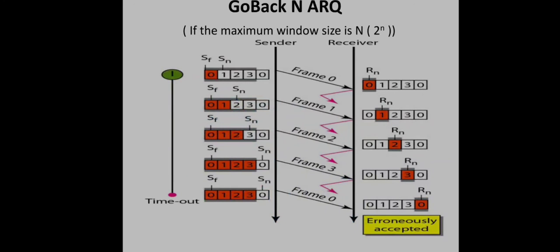Now let us think about how the window size is chosen. Here, small n represents the number of bits used for the sequence number, and capital N represents the window size (number of frames in a window). For example, suppose n = 2, meaning we use 2 bits to represent sequence numbers, giving us 4 different frames numbered 0 through 3. If we take the window size capital N = 2^n = 4, let us see what happens. The sender window is 0 through 3, and the receiver also expects frames 0 through 3.